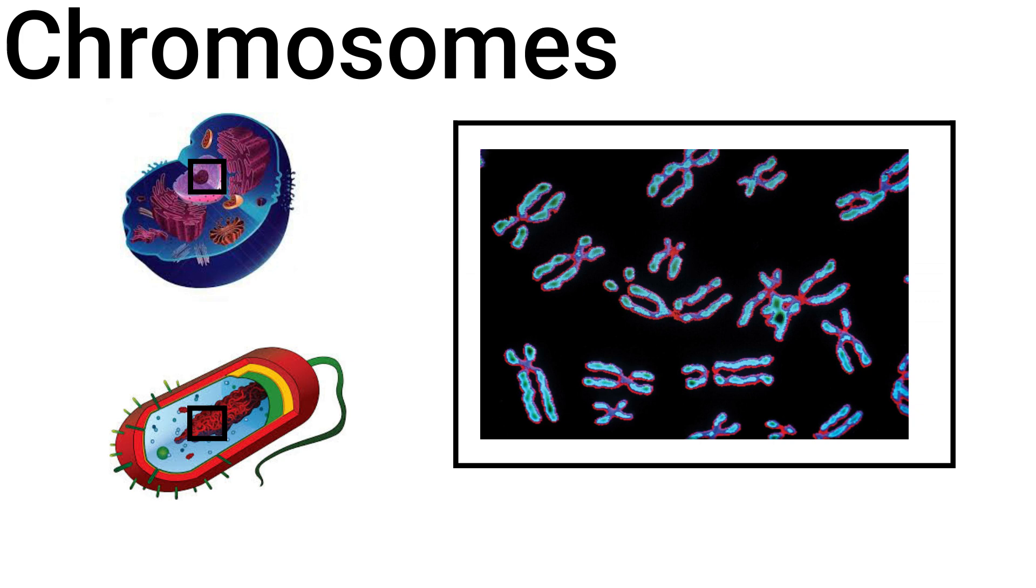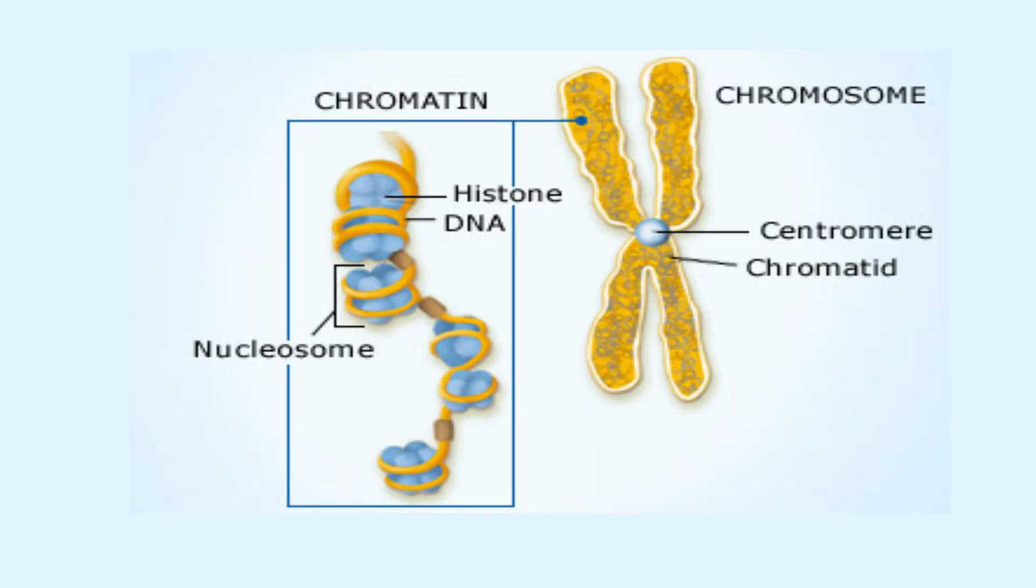All cells also have chromosomes, which store the genetic information for the cell in the form of DNA. The cool thing about chromosomes is how incredibly compact they are. Chromosomes are made of chromatin, which is tightly coiled around proteins called histones.